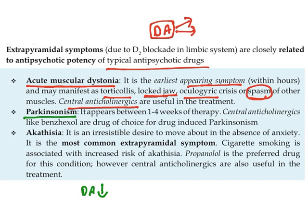The next extrapyramidal effect is pseudo-parkinsonism. Since parkinsonism is caused by decreased dopamine, antipsychotic drugs blocking dopamine may cause parkinson's-like symptoms. This takes at least one to four weeks to appear. Central anticholinergics like benzhexol are used to treat this adverse effect.